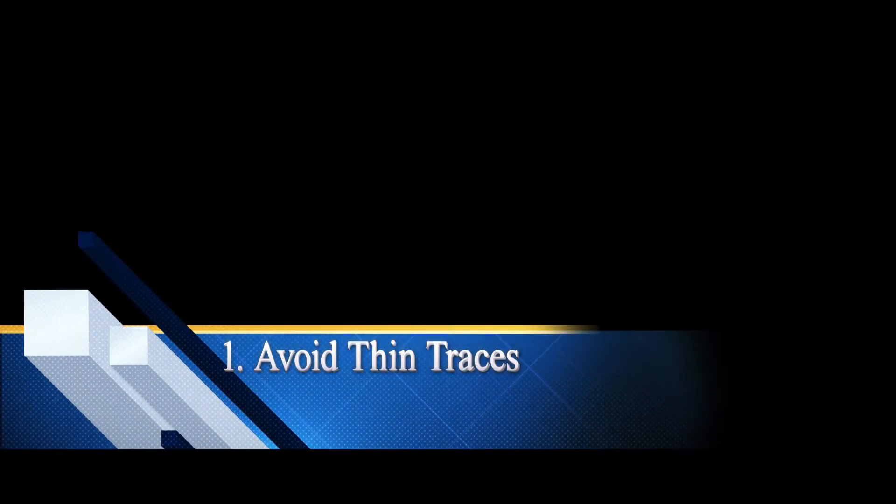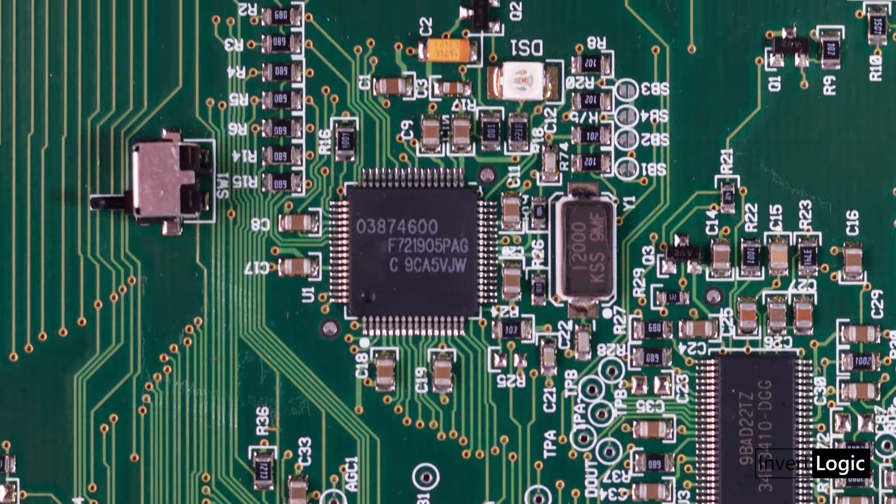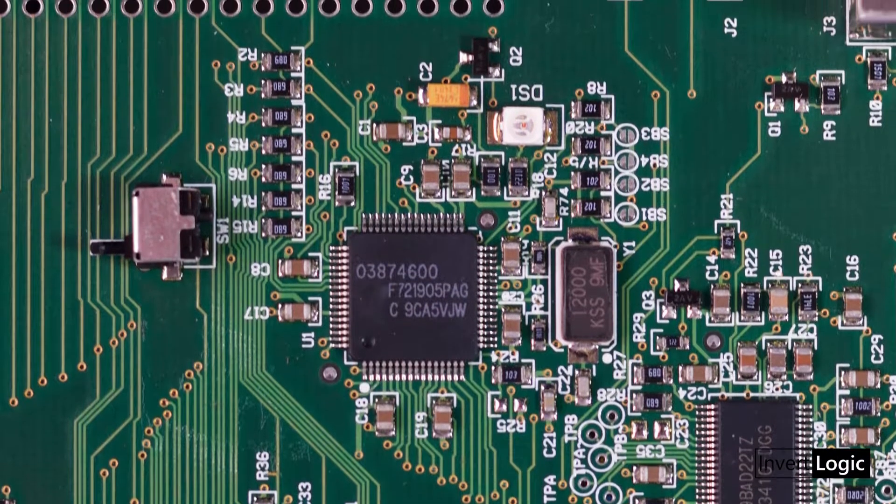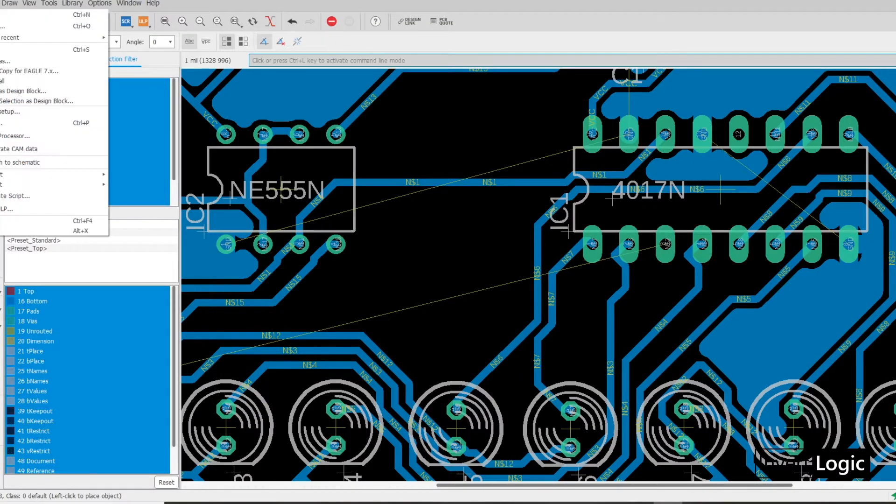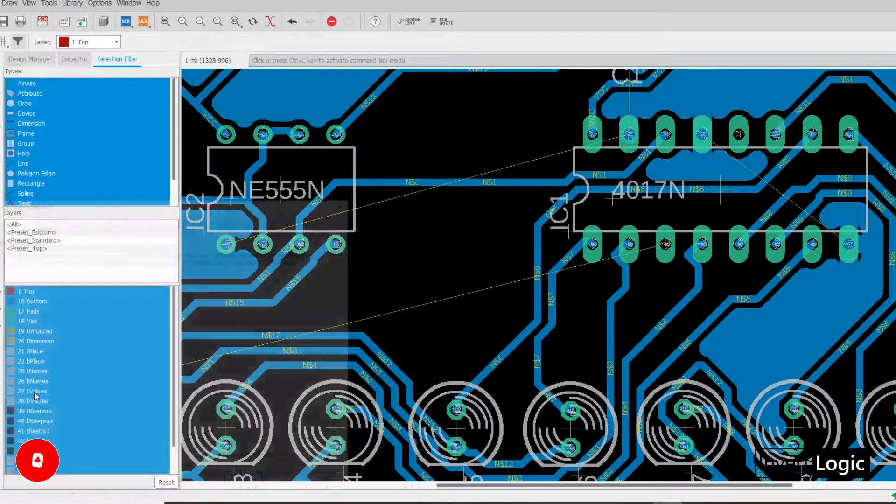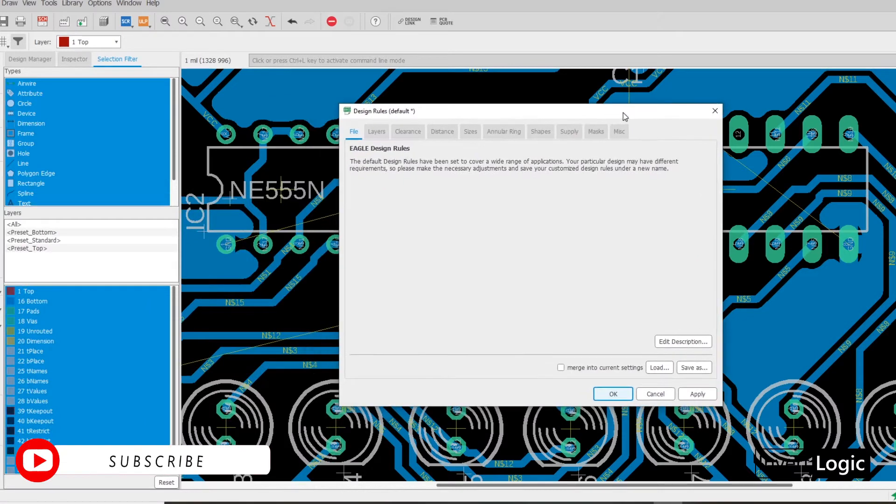1. Avoid thin tracers. PCB has many tracers that carry signals or power between different components. The width of these tracers is set in design software based on the requirements and can be measured in unit of mils.